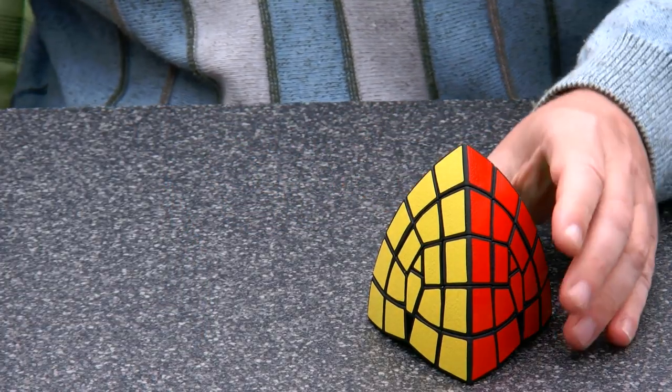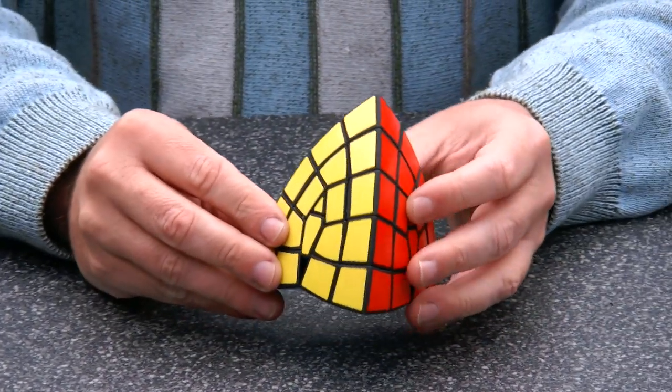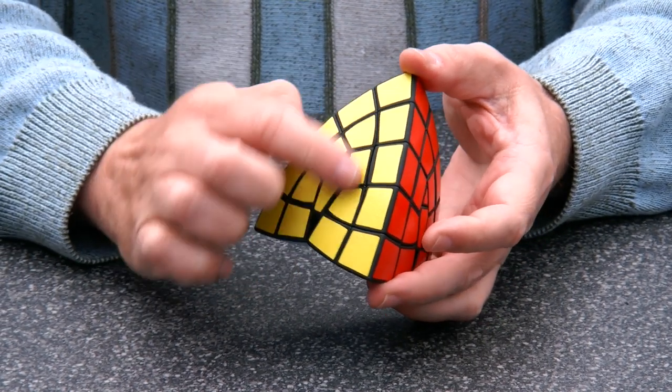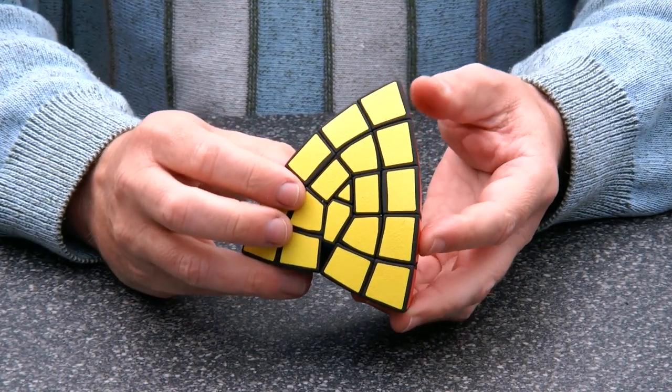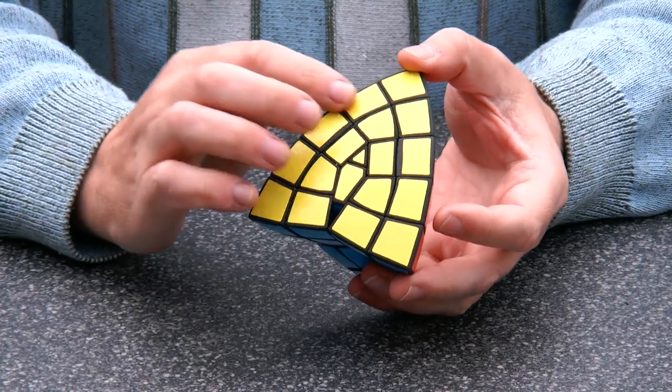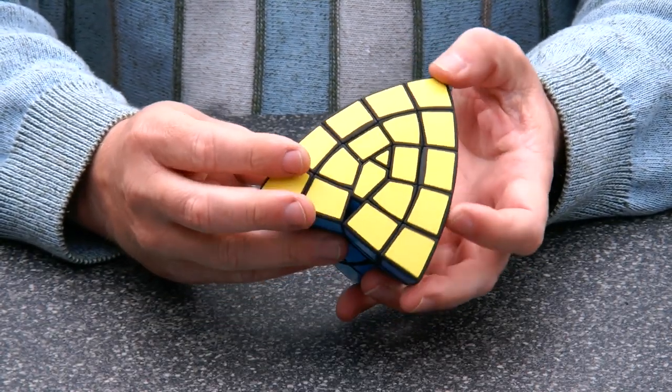So here we have the higher order version. It is the equivalent of a 5x5x5 Rubik's cube, but instead of a cubic core we of course have this dovetail core at the inside.